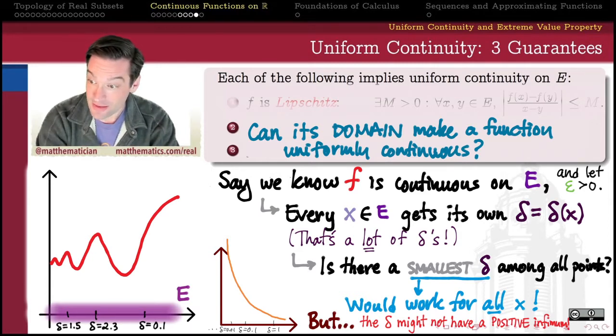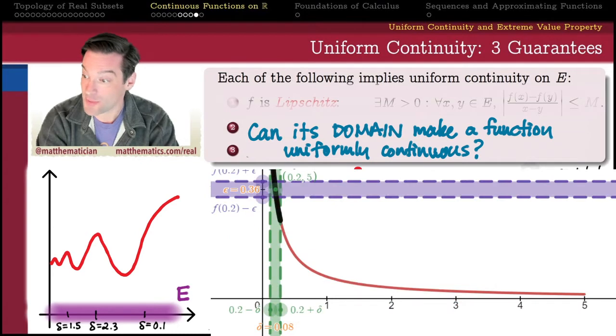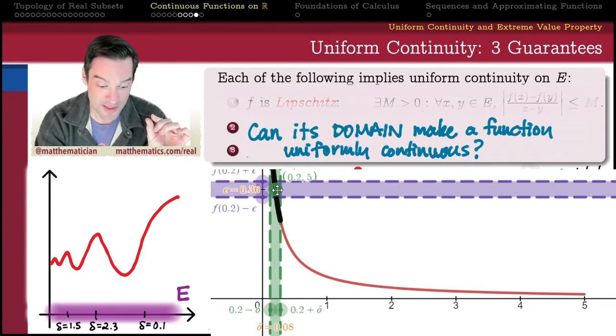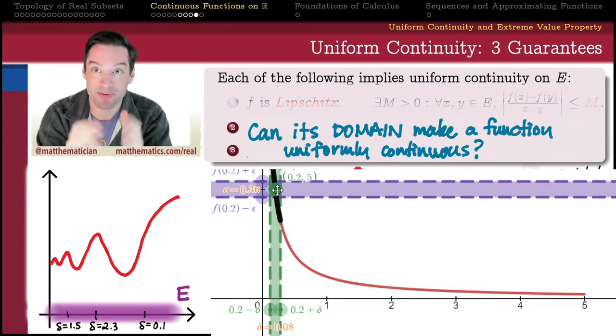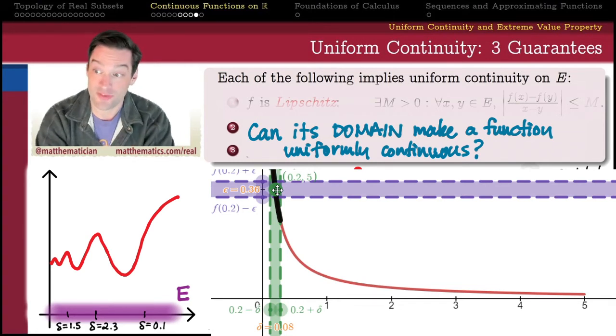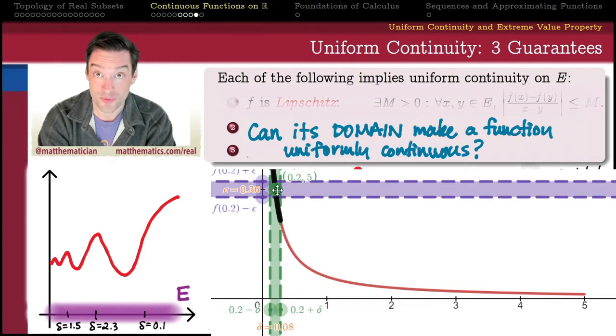Indeed, that was exactly the case that happened with our reciprocal function. The closer that we get to that vertical asymptote, the smaller that the delta that goes with my epsilon gets. In fact, we kind of have to pick something like, I don't know, delta equals one over epsilon. We have to pick some delta that gets increasingly smaller and smaller and smaller and smaller as the x gets closer and closer to zero.